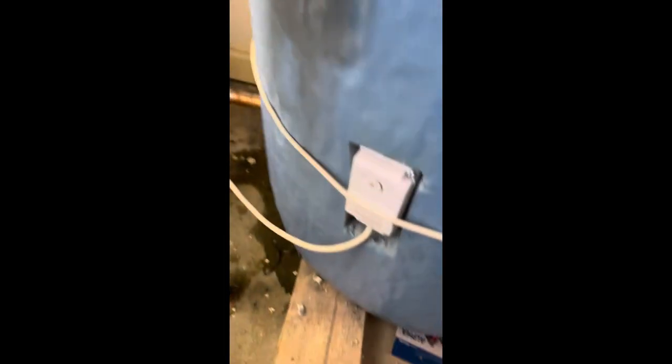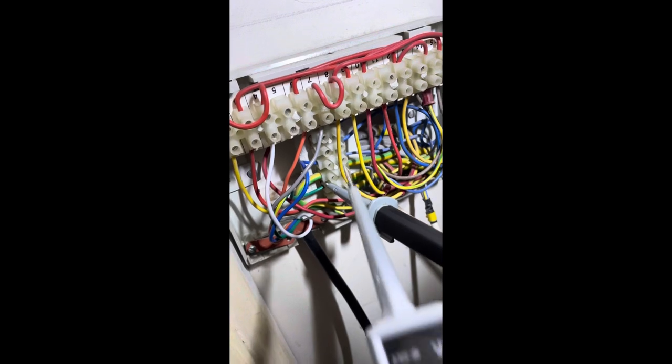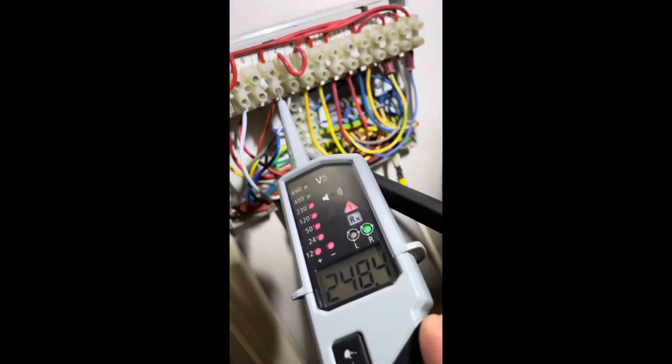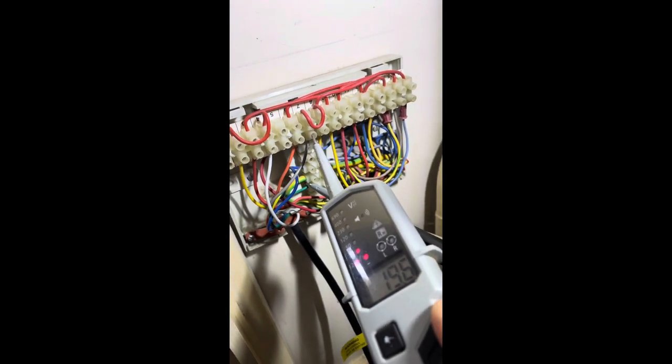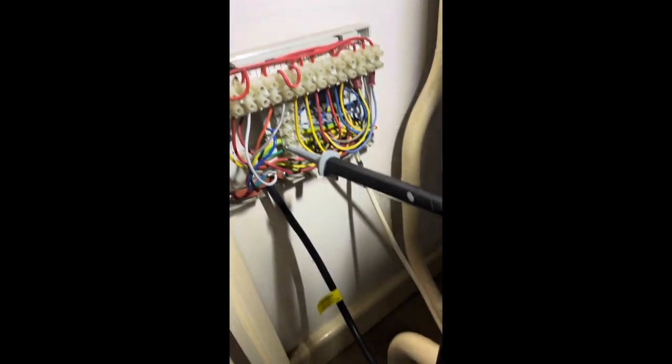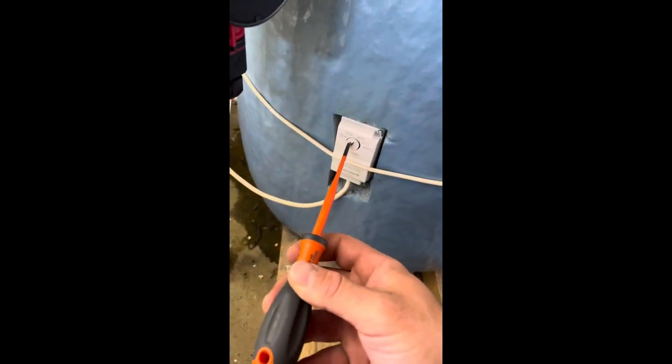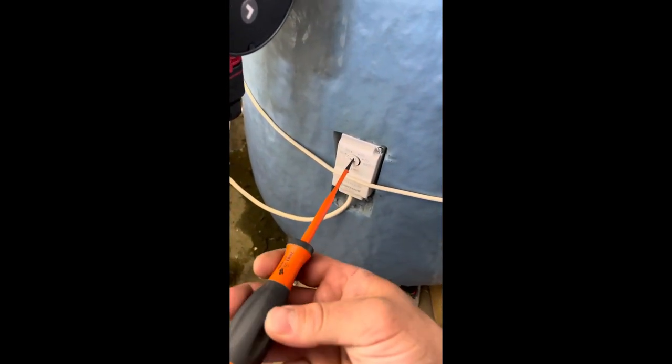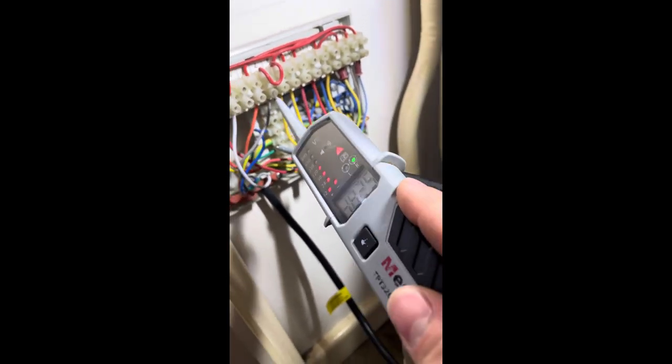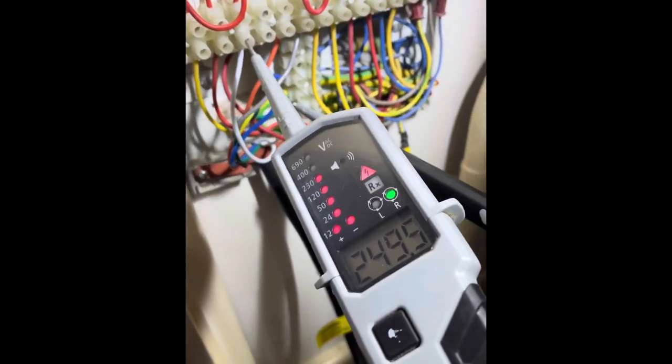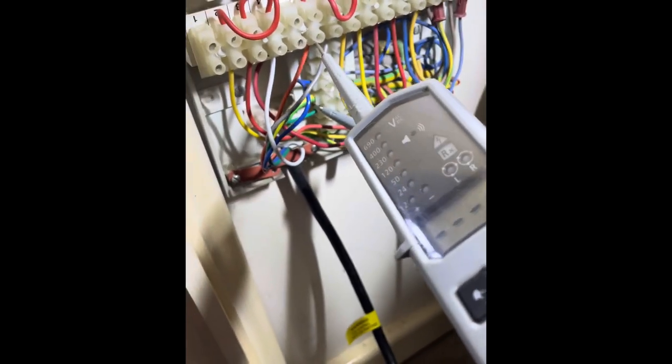Another Y-Plan system. Calling for hot water. 240 on orange, just fire the boiler. Nothing on grey. Turn the cylinder stat down. You should get nothing on orange, 240 on grey. Heating on. 240 on white. 240 on orange. Heating working.